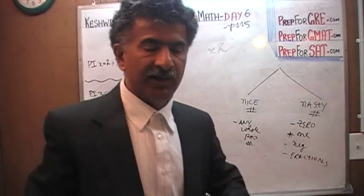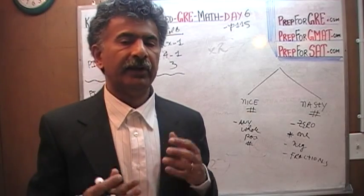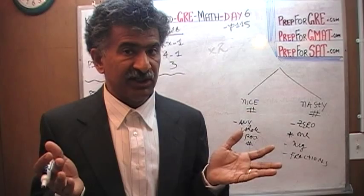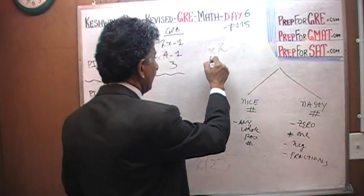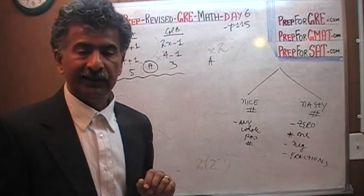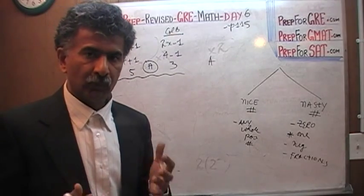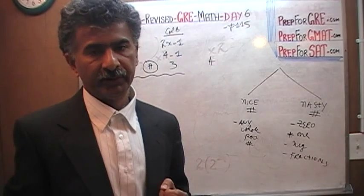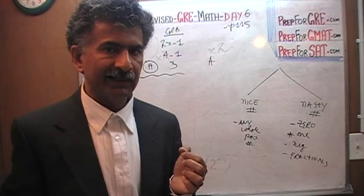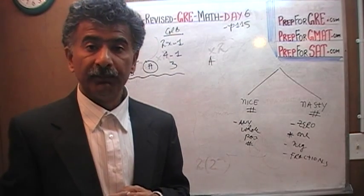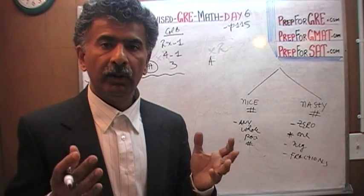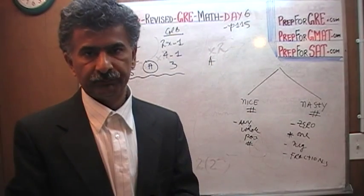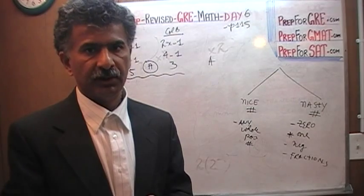If the answer does not change after trying all of these scenarios — if it stays the same — then there is a very high chance that is the answer. There is no guarantee with the plugging-in technique, because you may have left out some scenario where the answer might change. When you pick answer choice A in a quantitative comparison question, you are claiming that the quantity in column A is always greater. When you pick B, you are claiming that column B is always greater. When you pick C, you are claiming the two quantities are always equal.